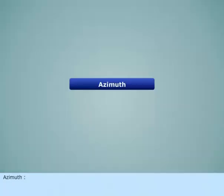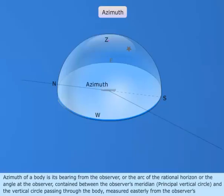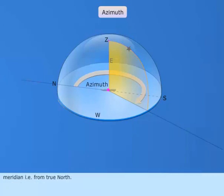Azimuth of a body is its bearing from the observer, or the arc of the rational horizon, or the angle at the observer, contained between the observer's meridian (principal vertical circle) and the vertical circle passing through the body, measured easterly from the observer's meridian — in other words, from true north.